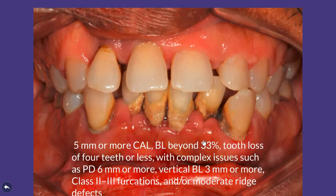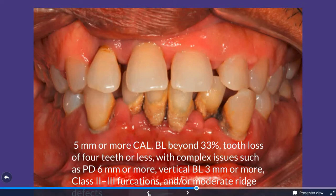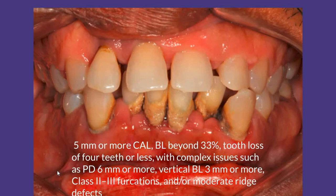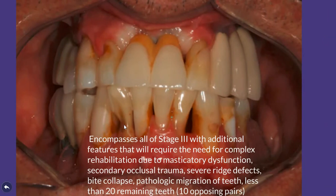In Stage 3, we have 5 mm or more attachment loss, bone loss beyond 33% reaching the middle of the root, probing depth over 6 mm, vertical bone loss, and Class 2 or 3 furcation involvement. If you find Class 2 or 3 furcation involvement, it is definitely Stage 3 or 4. Stage 4 presents with bite collapse, drifting, large spacing, and fewer than 20 teeth remaining due to periodontal disease.